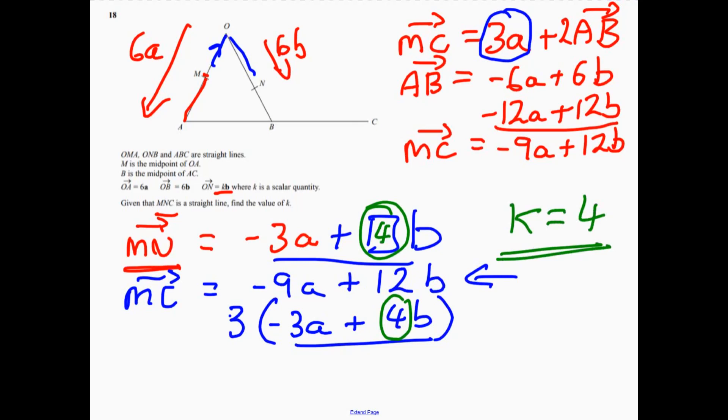The crucial bit is understanding about vectors on a straight line. You know that these two... MC just must be an extension of MN.